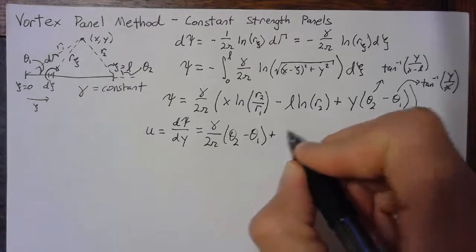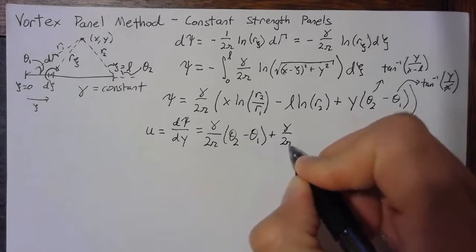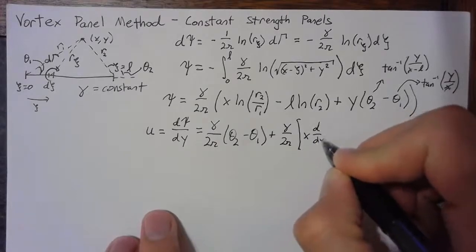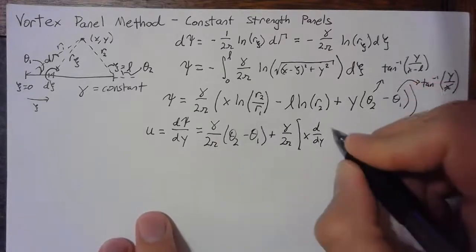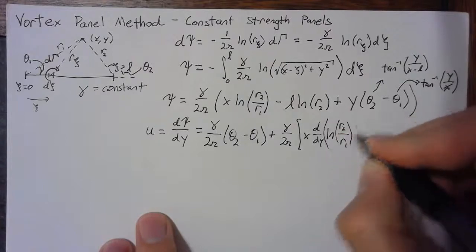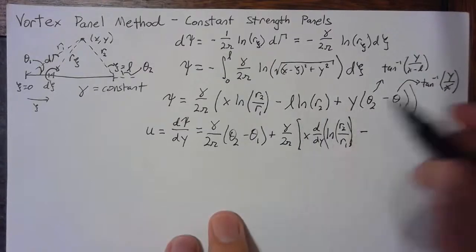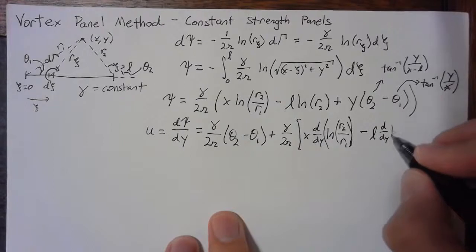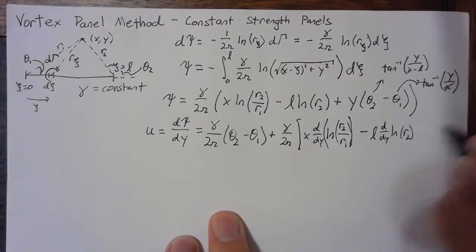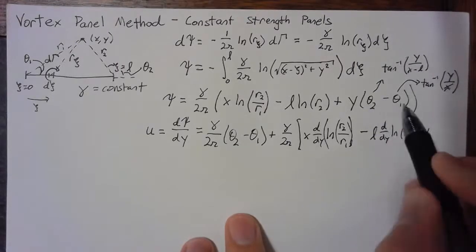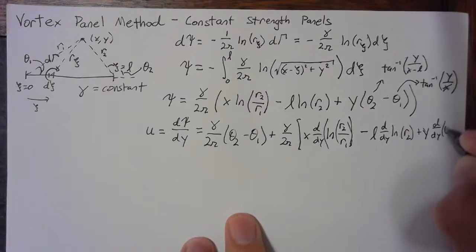As for all the rest, you're going to end up with gamma over 2 pi times x d by dy. You'll get this term, natural log of r2 over r1, minus the derivative of this term, which is L d by dy times the natural log of r2, and then y times the derivative of this term, which is d by dy of theta2 minus theta1.